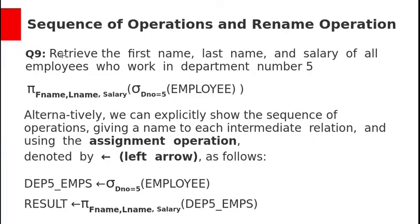Consider this query: retrieve the first name, last name, and salary of all employees who work in department number 5. The relational algebra query is: project fname, lname, salary — then select department number equal to 5 on relation employee. Here, the selection operation is nested inside the projection operation.